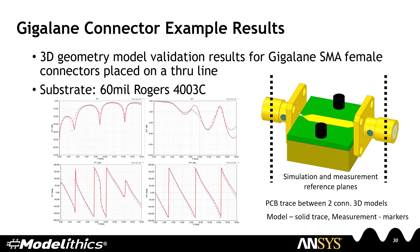In this example, we show the 3D geometry model validation results for two Gigalane SMA connectors placed in back-to-back configuration on a through line. Once again, note the excellent agreement between both magnitude and phase.